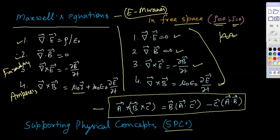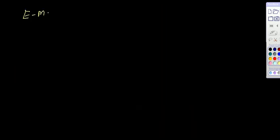One more tool required is the triple cross product formula: A cross (B cross C) is equal to B(A·C) minus C(A·B). These are the two tools — the four Maxwell equations and this formula — which we require to derive the relationship of electromagnetic waves.